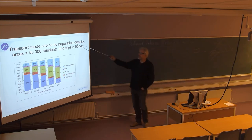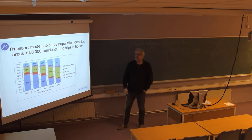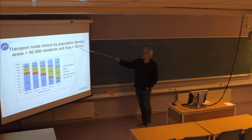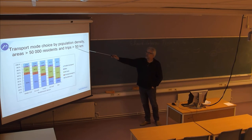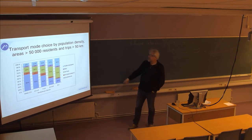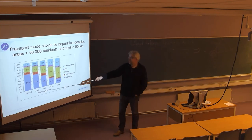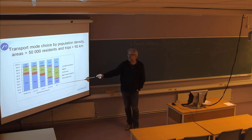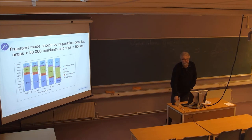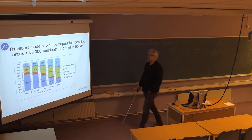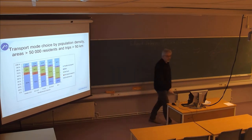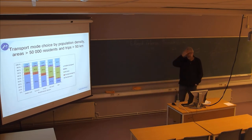Here we have the transport mode choice by population density in areas over 50,000 residents, which starts to be a significant city, and with trips less than 50 kilometers. We see that with 20 or more residents per hectare, non-motorized transport and public transport take the lion's share of the transport activity, which is contrary to less dense areas, even if the city is defined as being larger than 50,000. This underlines the fact that density matters here.